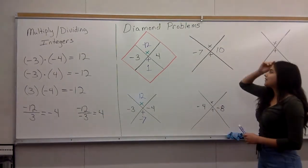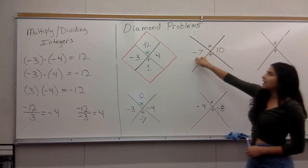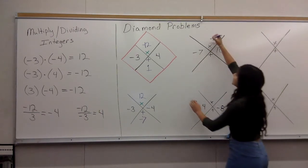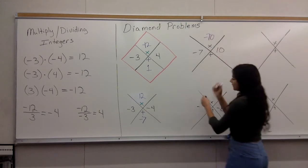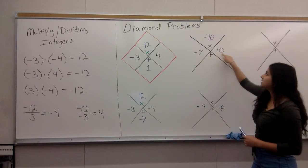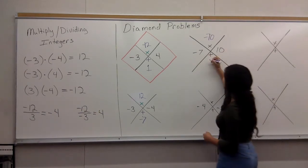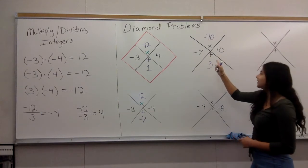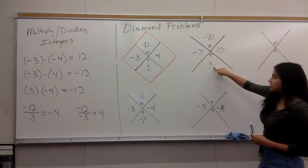Over here we have a negative seven and a negative ten. A negative times a positive equals a negative, so your answer is going to be negative 70. Now you add them on the bottom: negative seven plus ten. You take the sign of the bigger number when you're adding — only when you're adding and subtracting — so it's going to be positive three.